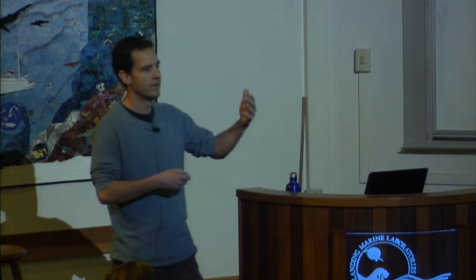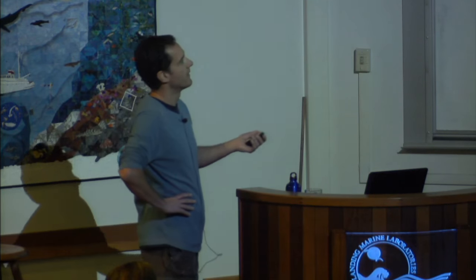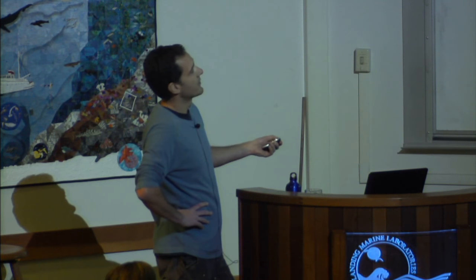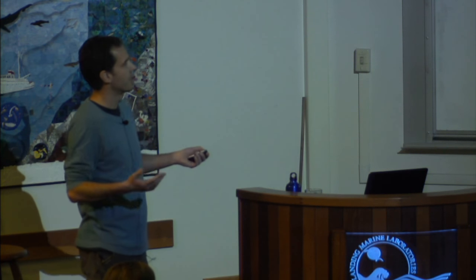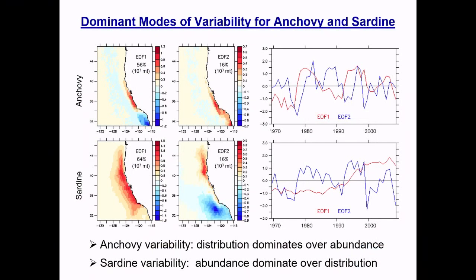EOF analysis on the temporal variation of sardine and anchovy distribution reveals another contrast between the two species. For anchovies, changes in abundance over time are mostly explained by changes in their spatial distribution — a north-south shift — while overall changes in biomass come second. For sardines, variability in time is primarily explained by changes in abundance (about 64% of variance), while meridional shifts in distribution explain about 16%.